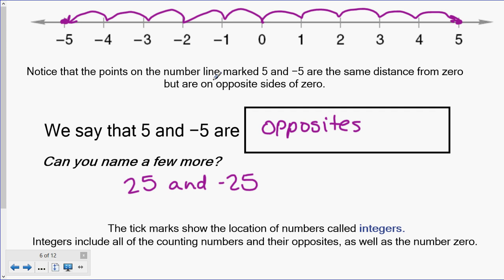Integers include all of the counting numbers and their opposites, as well as the number zero. So counting numbers are, you know, zero, one, two, three, four, five, numbers that I told you the other day are numbers that my daughter Kylie is currently learning. Now their opposites are all those negatives, negative one, negative two, negative three, negative four, negative five, et cetera. All of those numbers are integers. So that's a word that you should become familiar with.